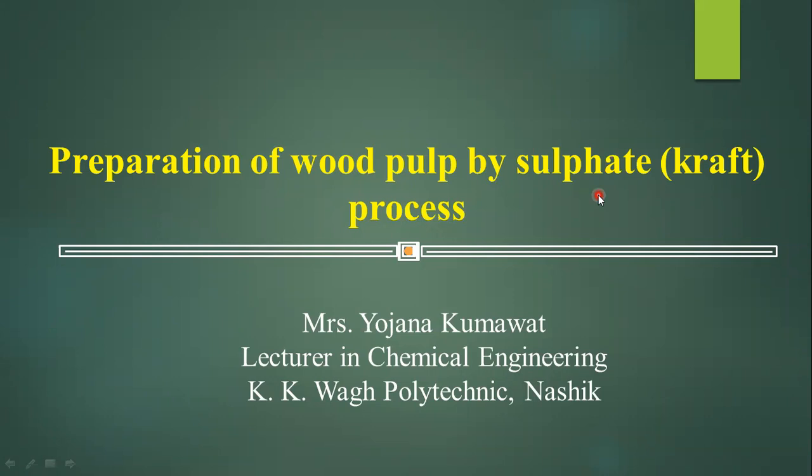Today I am going to tell you about the preparation of wood pulp by sulphate process. This process is also known as the kraft process, and this wood pulp is used for the manufacturing of paper.